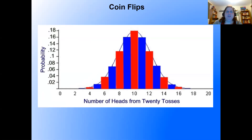Here's a quick reminder about our coin flips. Even though coin flipping is quite a dichotomous activity — you either get heads or tails — when we did a whole bunch of coin flips and counted the number of heads and their frequencies, we came out with a normal distribution.